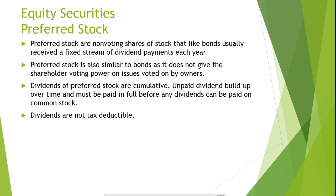Although preferred stock is of lower priority than corporate bonds on the claim of the underlying company's assets, preferred stocks often still sell for lower yields. It is presumed that this is because of the Dividend Income Exclusion, because theoretically a higher risk investment should return higher yields. Without the Dividend Income Exclusion, preferred stock yields would be considered unattractive compared to other available assets that deliver higher yields.